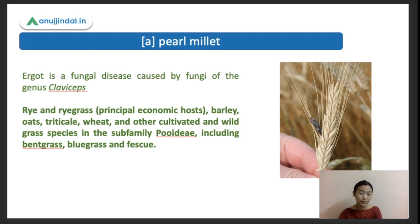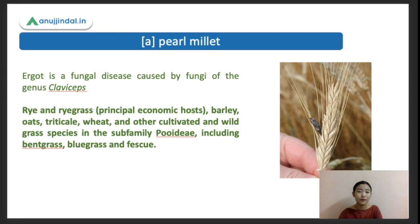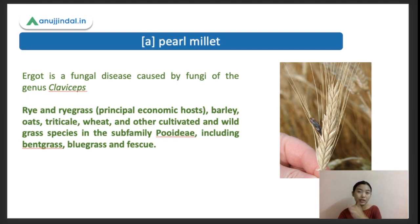It has two major species: Fusporum and purpurea, with purpurea being very famous. The host range of ergot includes rye, rye grasses, barley, and mostly the Poaceae family - grasses. It includes oats, barley, wheat, and other wild grasses belonging to the subfamily Poaceae, including bentgrass, bluegrass, and fescue. It is very famous in pearl millet.